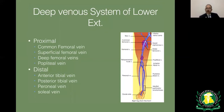Most clots form in the lower extremity deep venous system, which is divided into proximal and distal. The proximal system consists of the common femoral vein, superficial femoral vein, deep femoral vein, and popliteal vein. The distal system consists of the anterior tibial vein, posterior tibial vein, peroneal vein, and soleal vein.